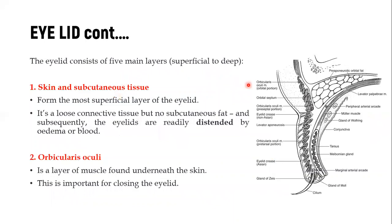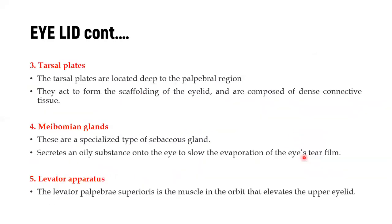The eyelid is made up of different layers. The most superficial is the skin or subcutaneous tissue, which is not made of a lot of fat, so it is readily able to distend and be filled with fluids and blood, leading to things like periorbital edema. Then we have a layer of muscle called the orbicularis oculi, which is very important for closing the eyelid.